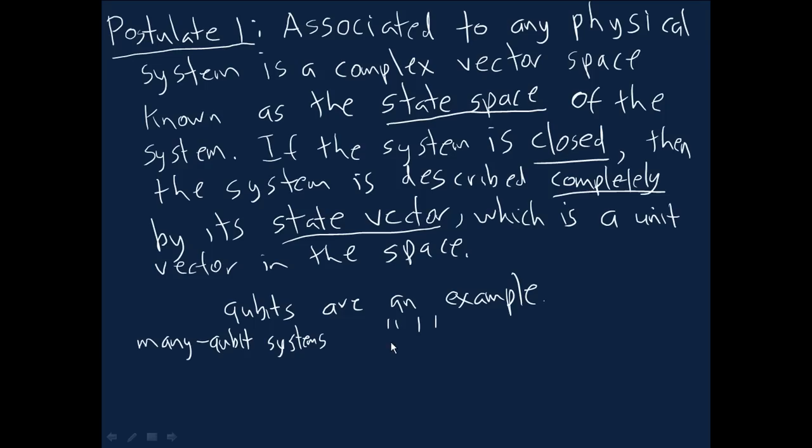Now for any particular real world physical system, an actual system in the lab, this postulate doesn't tell us, doesn't give us a recipe for figuring out what the state space or the quantum state is. For example, let's imagine our system is an atom, and it doesn't tell us what the state space of the atom is. It just tells us that there is one, there is a complex vector space which can be used, but it doesn't tell us the details of that. In particular, if you're thinking about the state vector, it doesn't tell you what the state vector is in any particular configuration for the atom.